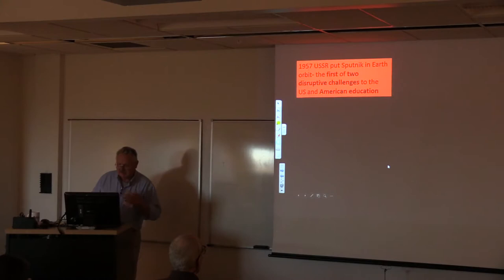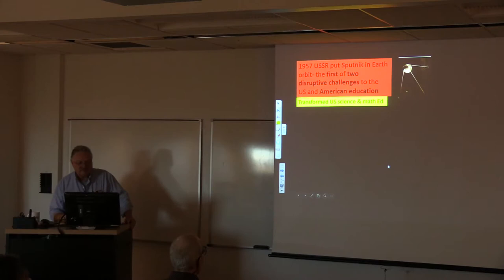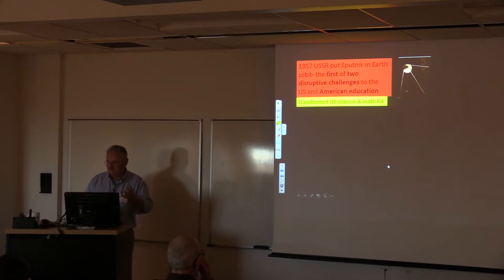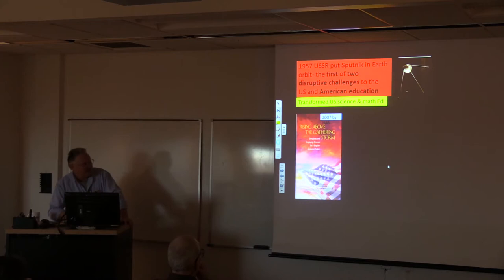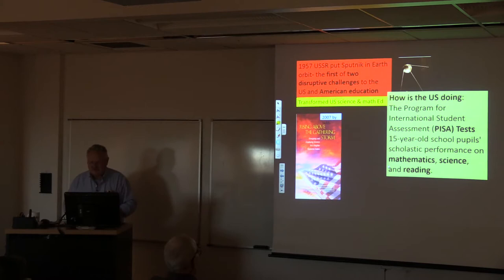A couple of things that really shook up the U.S. in my lifetime. In 1957, the USSR put Sputnik in Earth orbit. That caused the first of two disruptive challenges to the U.S. and American education. I rode that wave through school. It transformed chemistry, biology, and earth sciences to be something it wasn't before. And it transformed mathematics teaching as well. We're now looking at another disruption. This was a report put out called Rising Above the Gathering Storm, about the impact of globalization. Our young people are competing against young people in India, China, Hong Kong, that have an education which is in some ways probably superior.